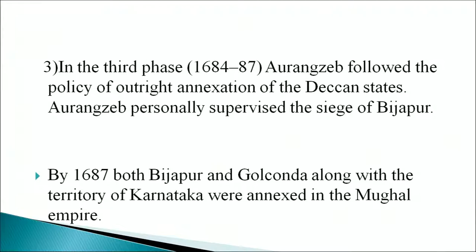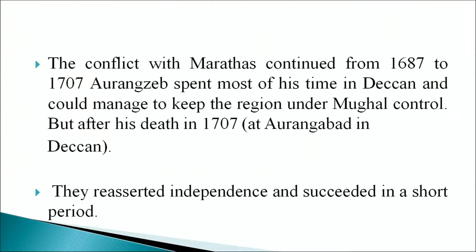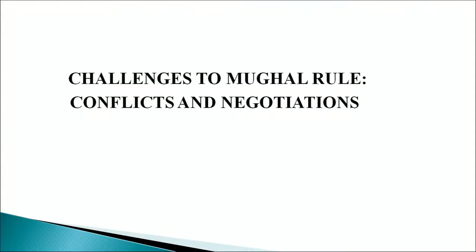The conflict with the Marathas continued from 1687 to 1707. Aurangzeb spent most of his time in the Deccan and managed to keep the region under Mughal control, but after his death in 1707, Aurangabad and the Deccan reasserted independence. Apart from the Deccan, Aurangzeb could expand Mughal power in Assam in the northeast. The major success in this region was the annexation of the Ahom kingdom under Mir Jumla, the governor of Bengal. Another notable achievement was the capture of Chittagong in 1664 under the new governor of Bengal. By 1680, the Ahom succeeded in capturing Kamrup and Mughal control ended.